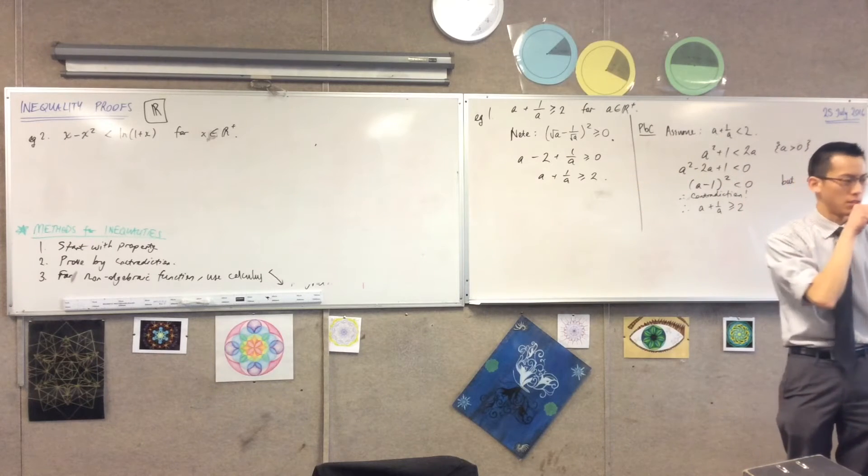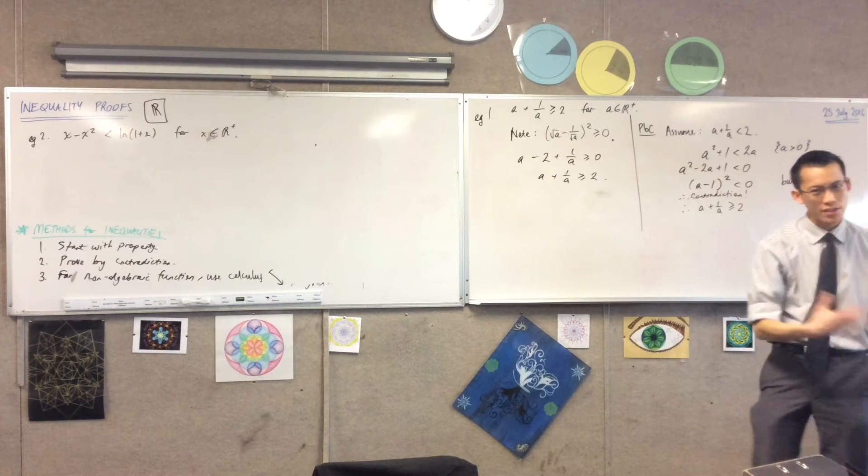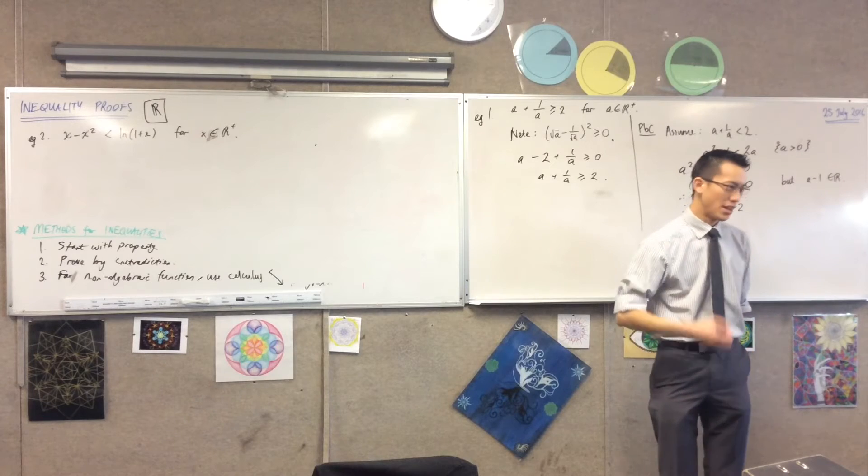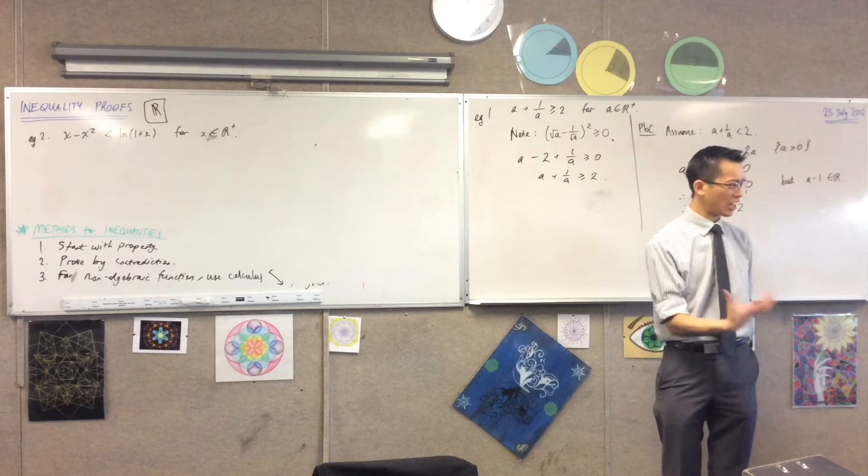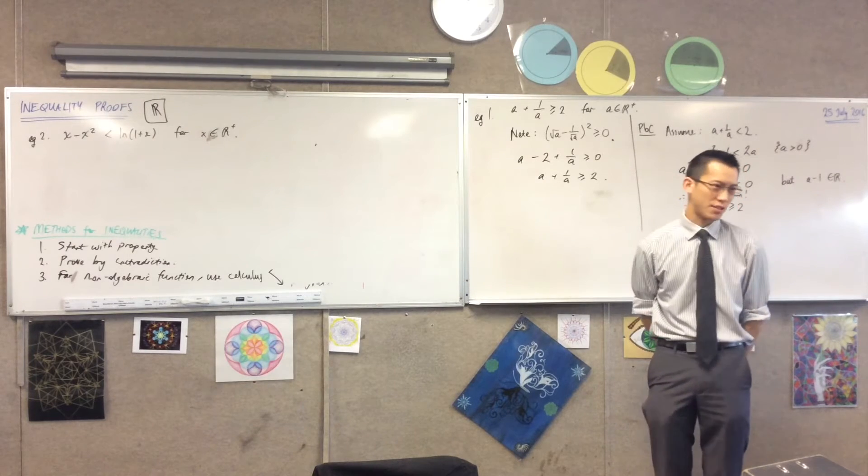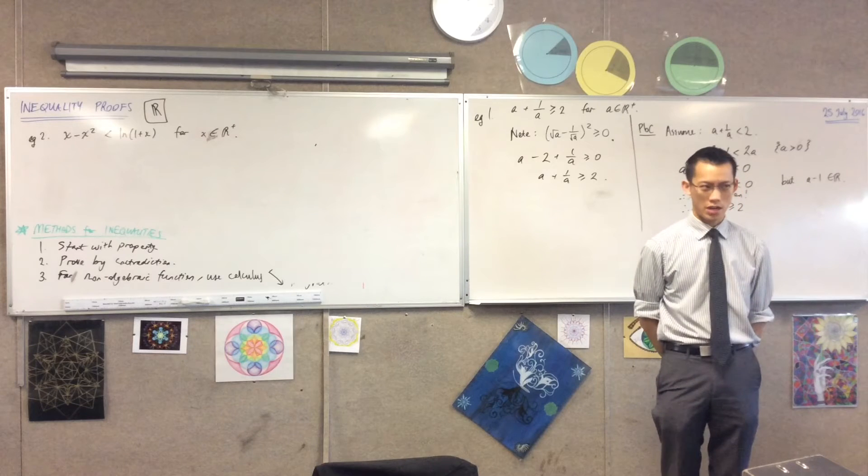Here's the example that I'm asking us to look at now, because I've just showed you 10 minutes ago the three broad ways of approaching inequality proof like this. This kind of sticks out like a sore thumb, right? What can you do with this?